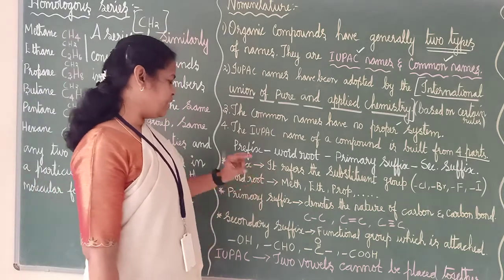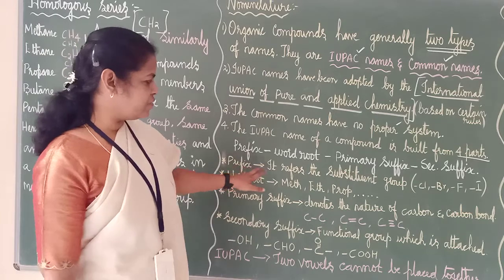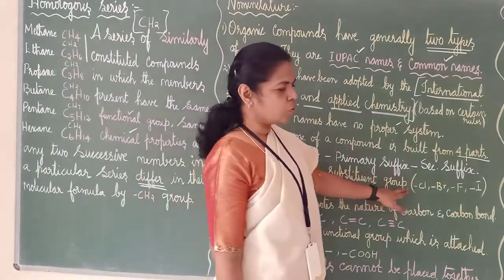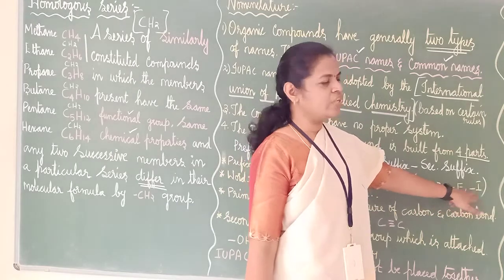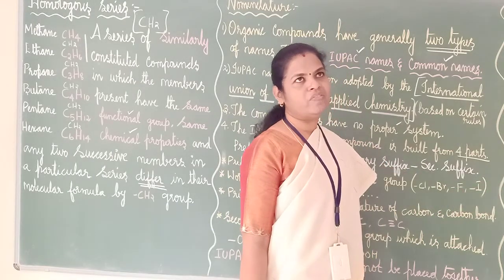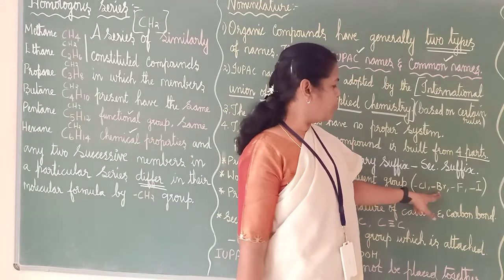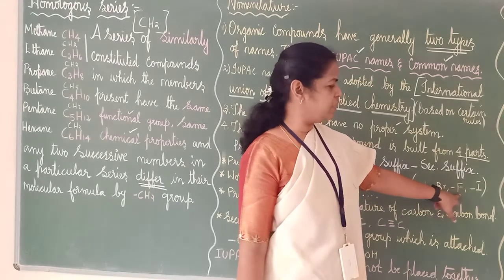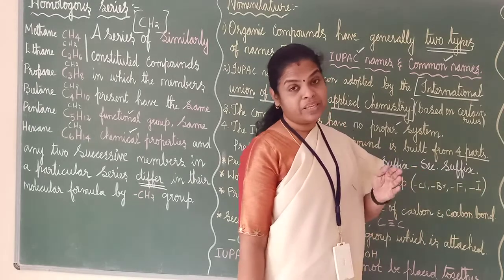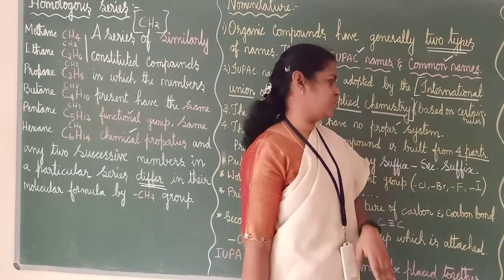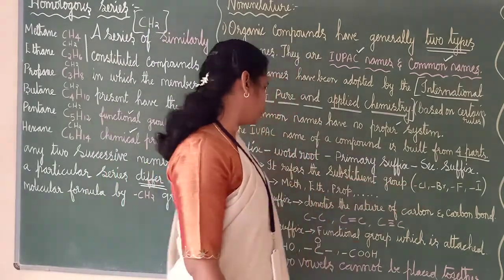What do you mean by prefix? It refers to the substituent group. For example, chlorine, bromine, fluorine, iodine will be added. We get names like chloromethane, bromomethane, fluoromethane, iodomethane — these come in the prefix position.